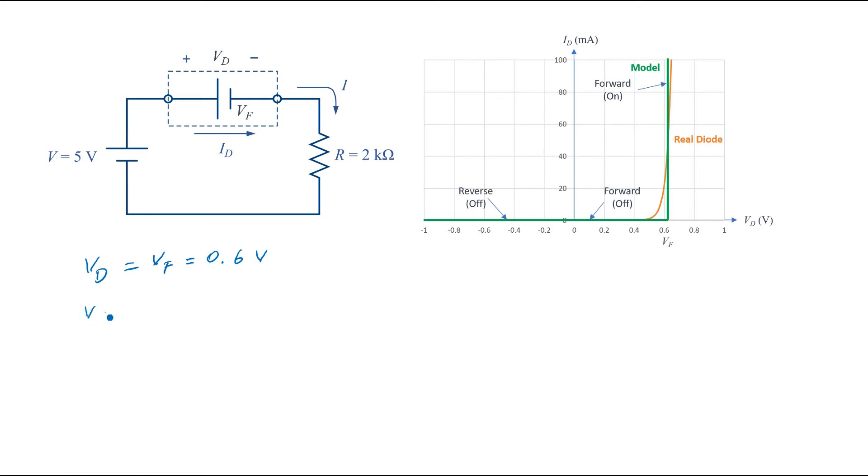Now if we write a KVL equation in this loop, the applied voltage V equals the forward voltage of the diode Vf plus the voltage across the resistor, which is R times ID. From here we can calculate ID.